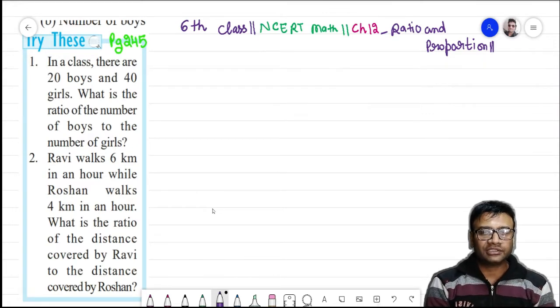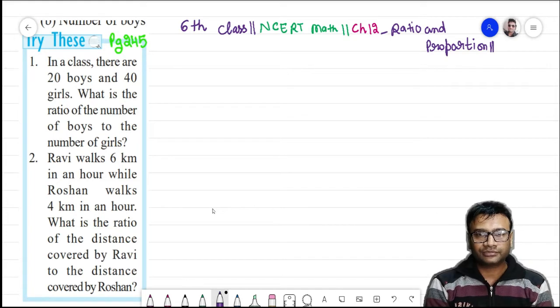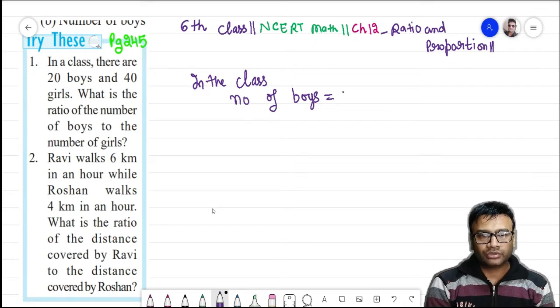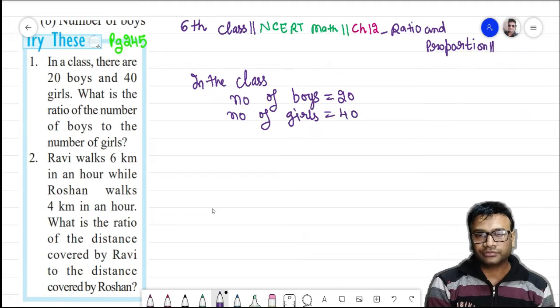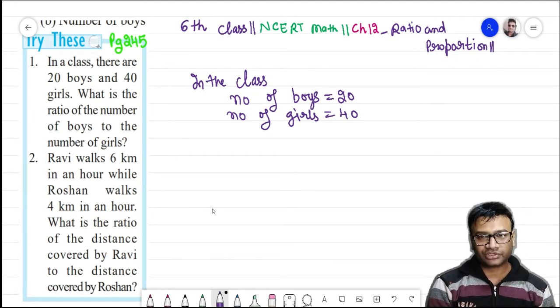What you will write here? First we will write, in the class, number of boys is equal to 20. Number of girls, these are 40. It means that number of girls is double that of the number of boys in the class. Total students in the class are 60. Have you understood?